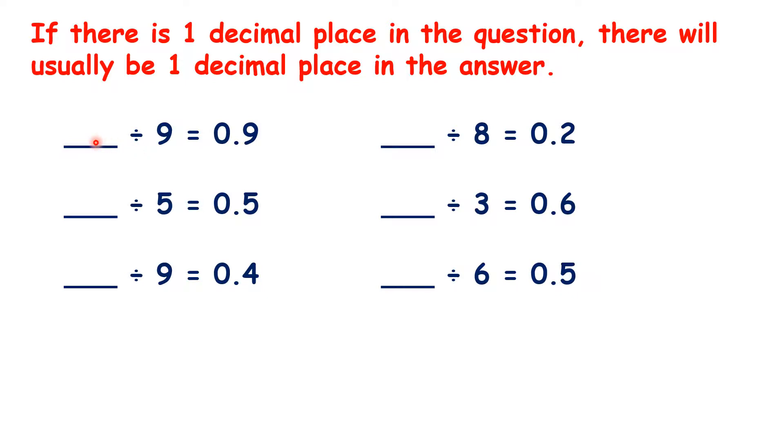So for our first question, we have something divided by 9 equals 0.9. We know that 81 divided by 9 is 9, so 8.1 divided by 9 is 0.9.